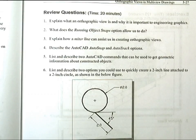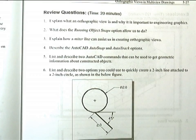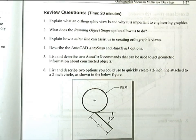We'll be ready to go here in just a jiffy. Number one is to explain what an orthographic view is and why it's important to engineering graphics. Multi-view drawings usually require several orthographic views to define the shape of a three-dimensional object. So each orthographic view is a two-dimensional drawing showing only two of the three dimensions of the three-dimensional object at a time.